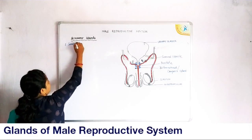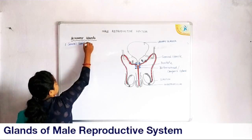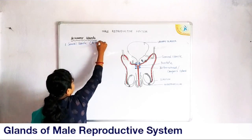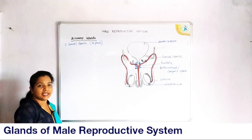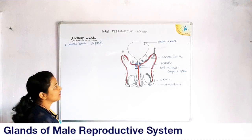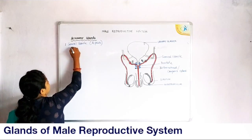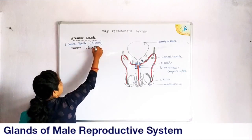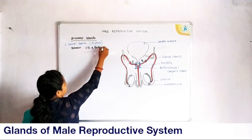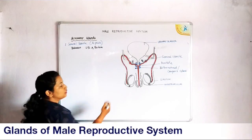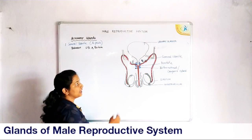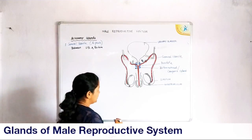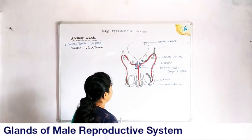There are a pair of seminal vesicles. They are present in between the urinary bladder and the rectum. The duct of the seminal vesicle opens into the ejaculatory duct.